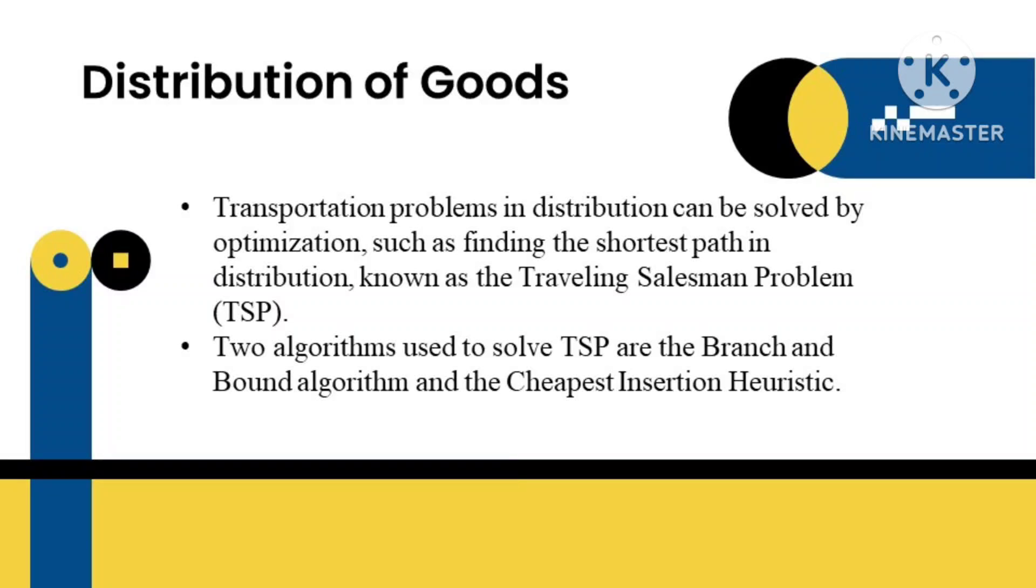Distribution is the process of getting goods produced from companies to customers, which is very important because without distribution, companies cannot make the maximum profit. Transportation problems in distribution can be solved by optimization such as finding the shortest path in distribution known as the Traveling Salesman Problem or TSP.